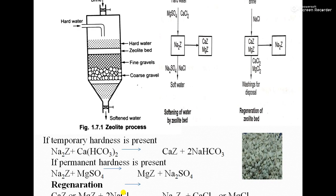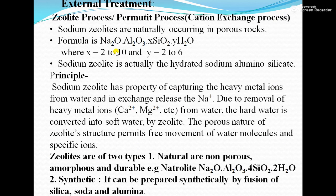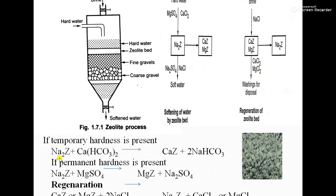Looking at the diagram of the zeolite process: first there is the hard water sample, then the zeolite bed, then fine gravels, then coarse gravels. The zeolite bed is also represented as Na₂Z in short.